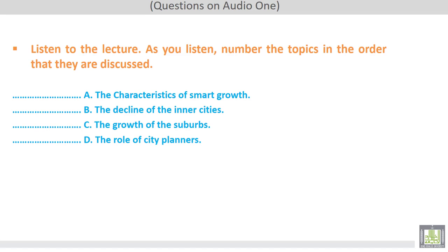After you listen to the lecture, number the topics in the order that they are discussed. Here we have four topics: the characteristics of smart growth, the decline of the inner cities, the growth of the suburbs, and the role of city planners. So how about the order these topics have been mentioned?